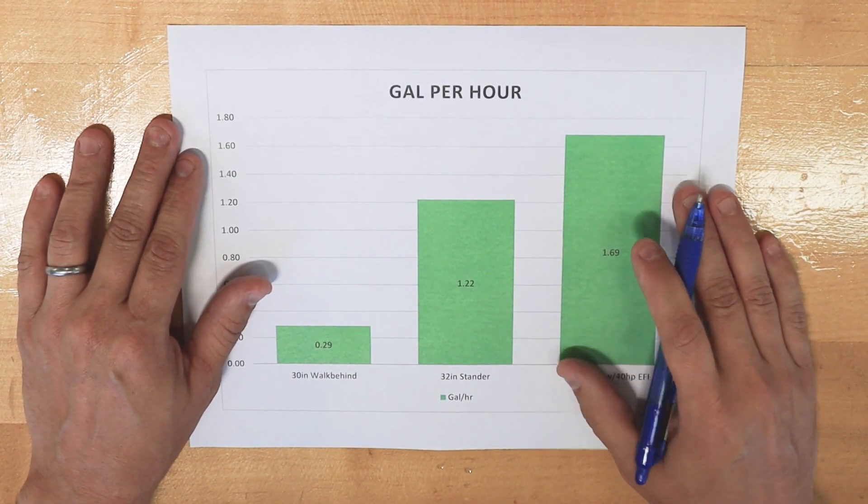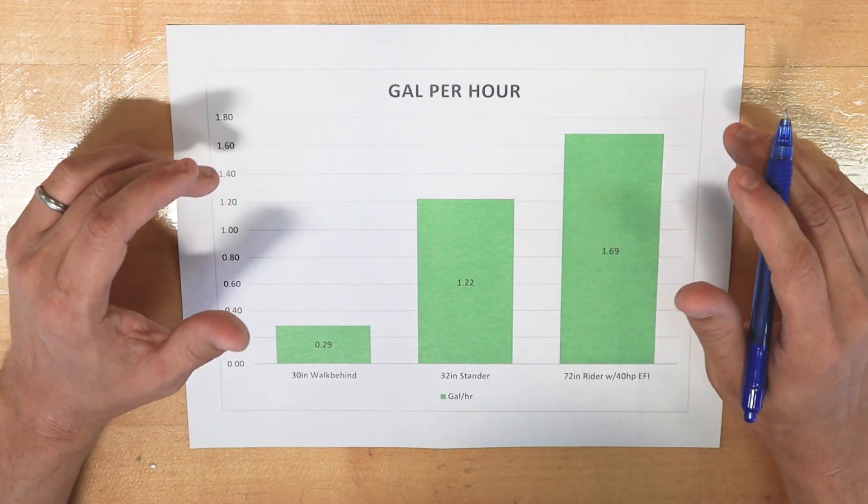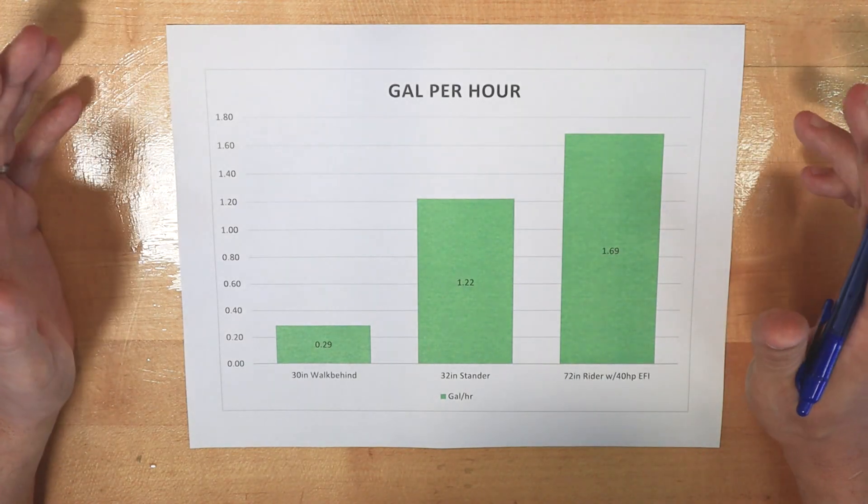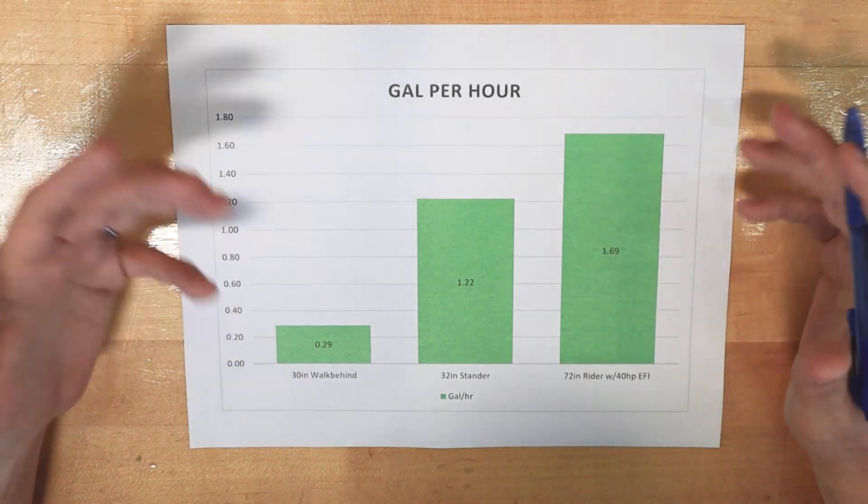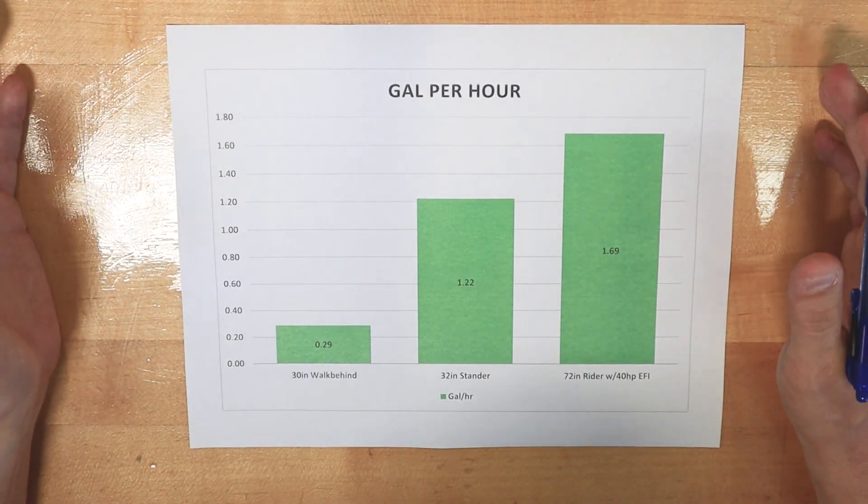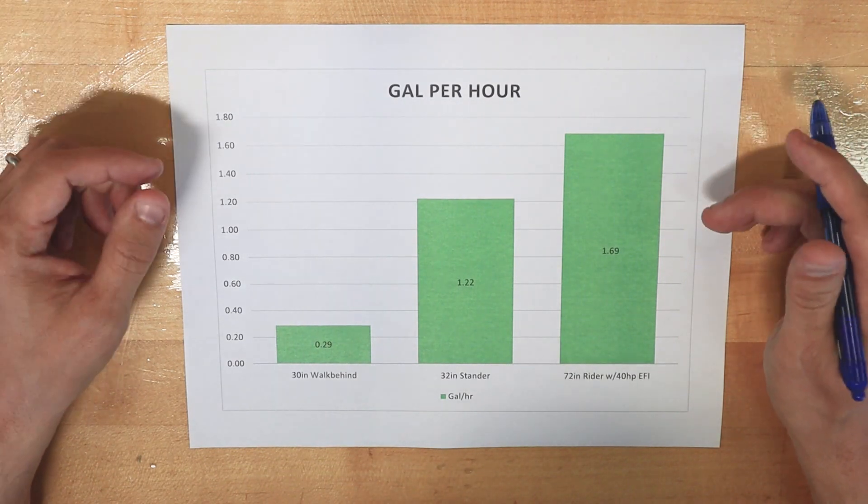And so it's not necessarily intuitive. The engines are rated at their max amount of fuel they can consume per hour and so you might see numbers of two gallons per hour and these kinds of things. But the reality is in real world conditions, what does this mean? When we include the amount of time it takes to mow a certain area, what does it mean?